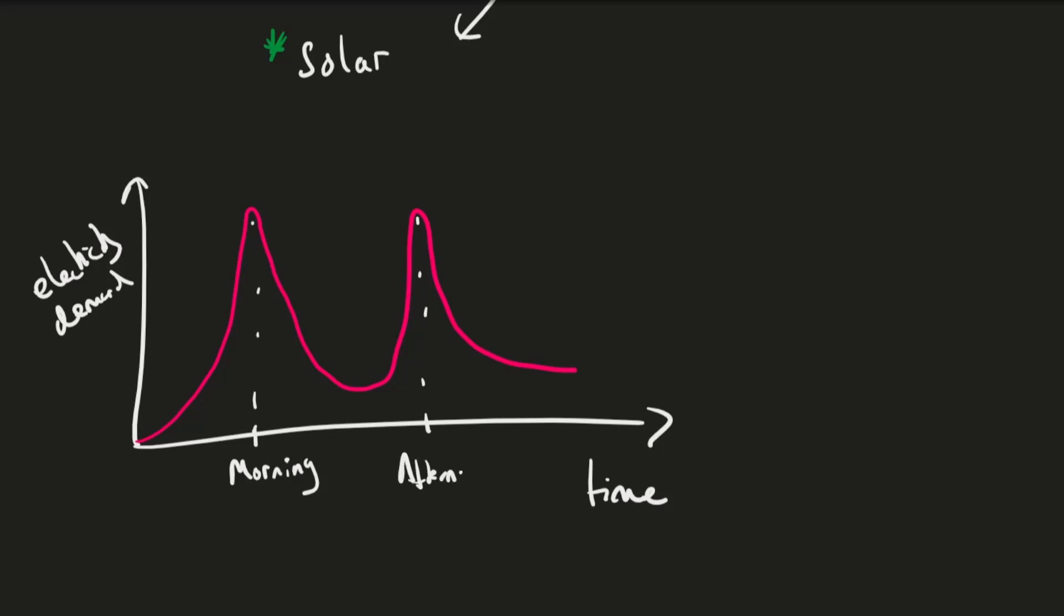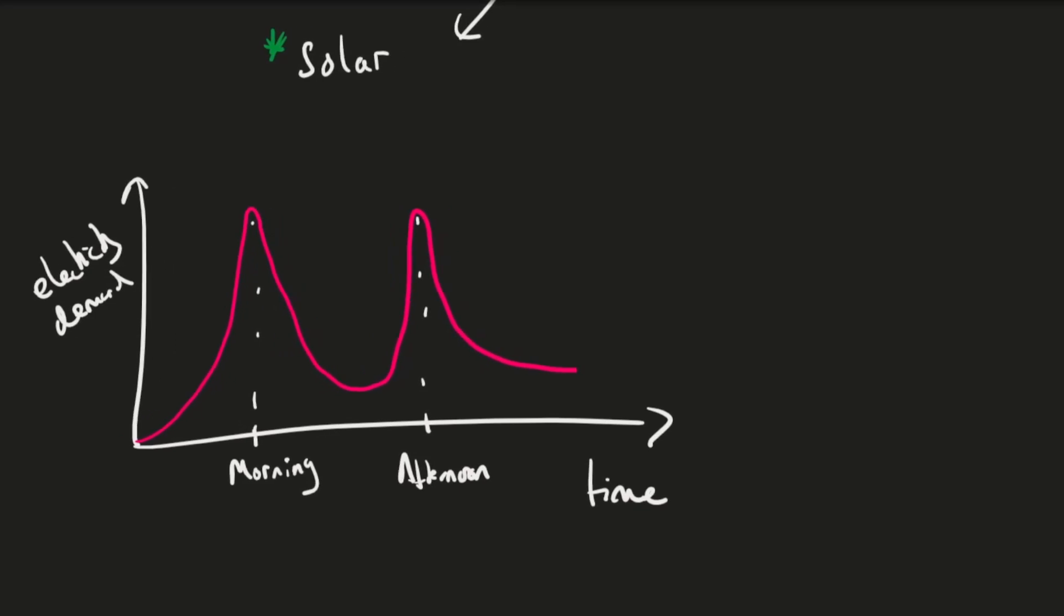And so what we need to build into our energy resource system is, or our national grid, is this ability to meet these peaks of demand at very specific times. And one way to do that is by using stores of energy or stores of electricity to actually meet these high peaks of demand. Okay, so that's it for this video. And we'll see you in the next one.